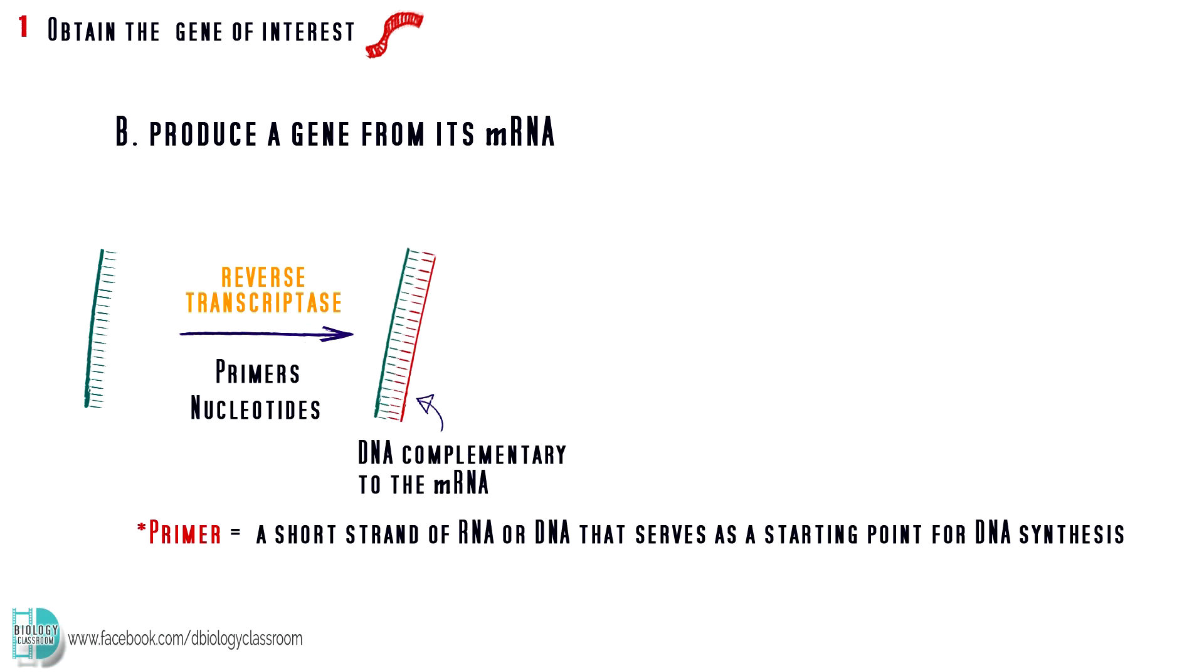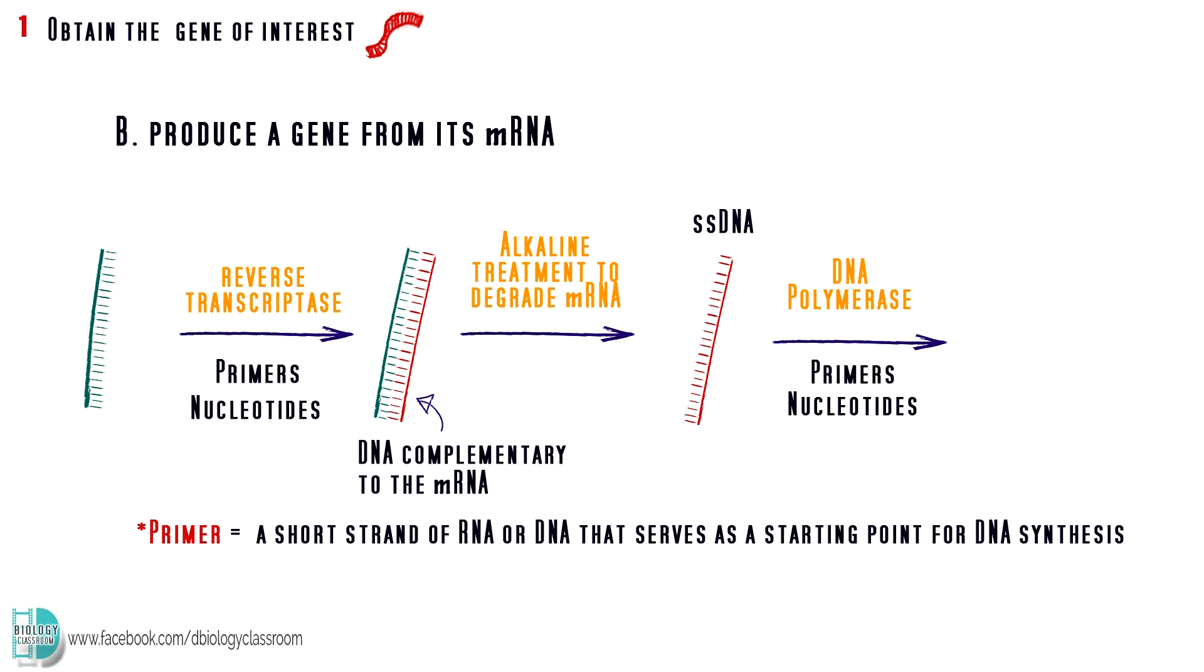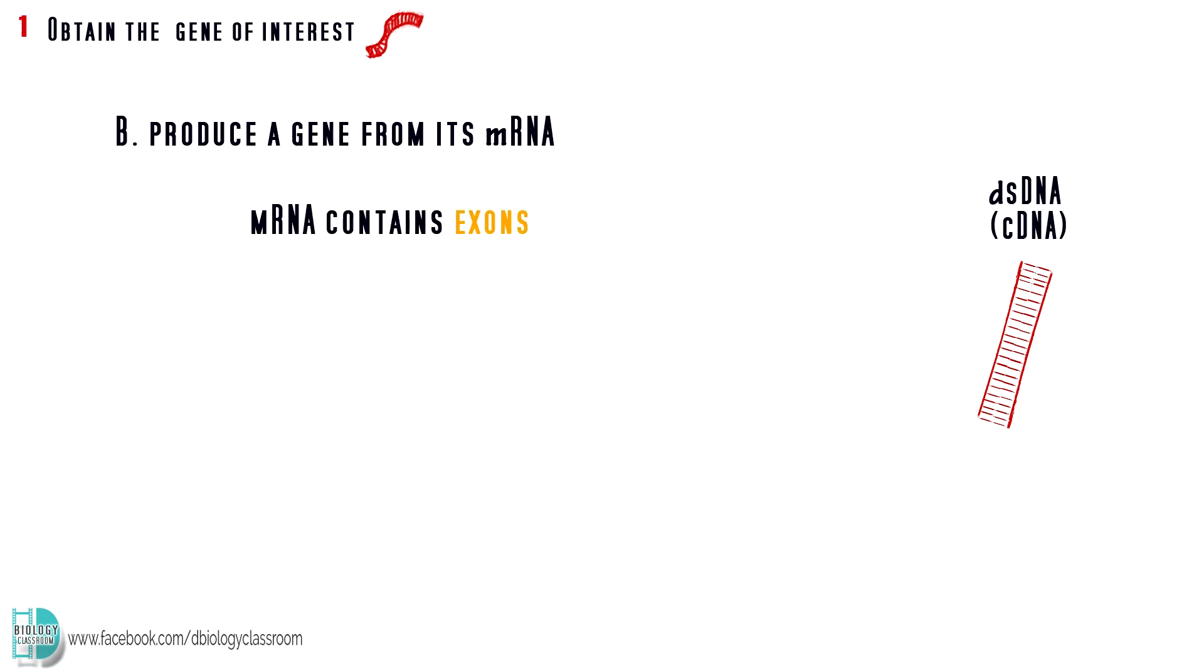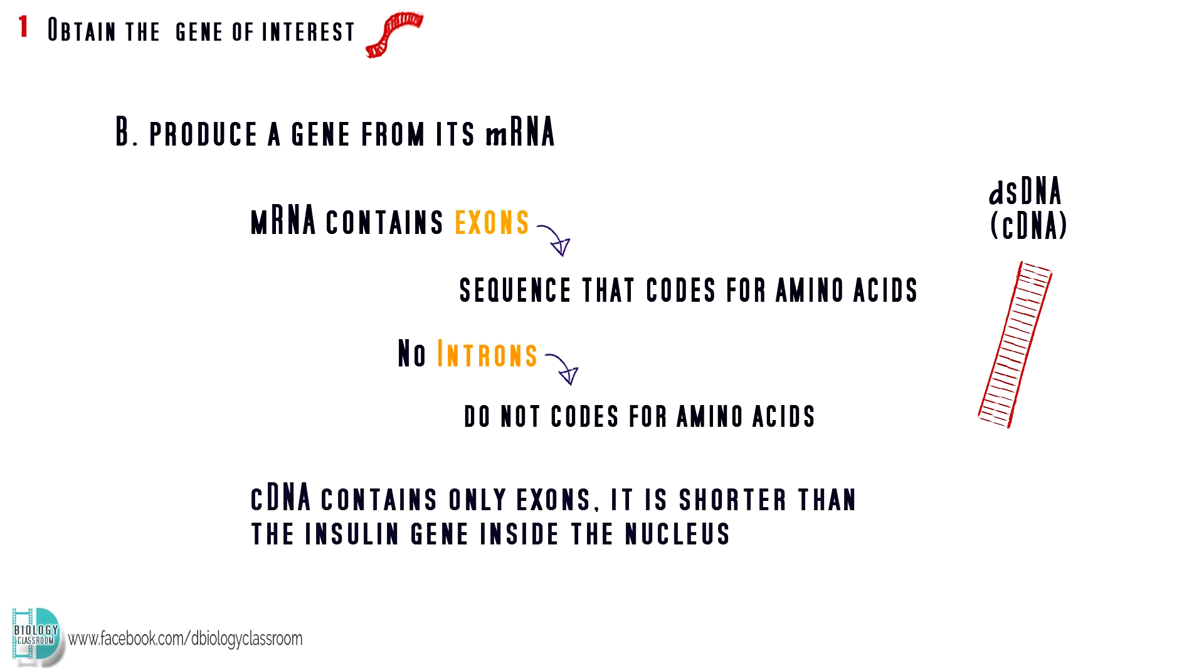Reverse transcriptase synthesizes a single-stranded DNA which is complementary to the mRNA. The hybrid is then treated with alkali. mRNA will be degraded. The single-stranded DNA is then incubated with DNA polymerase, primers, and DNA nucleotides. A second strand of DNA is then produced. This piece of double-stranded complementary DNA or cDNA can now be used. Since mRNA contains only exons, the sequence that codes for amino acid, and no introns, those that do not code for amino acids, this piece of cDNA also contains only exons. Hence, it is shorter than the insulin gene inside the nucleus.